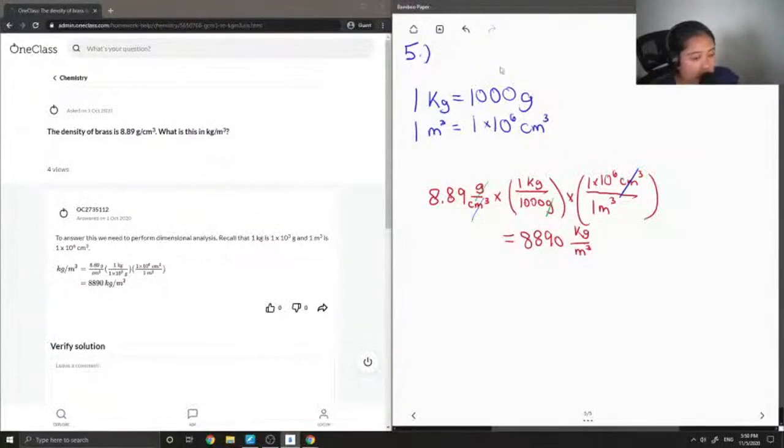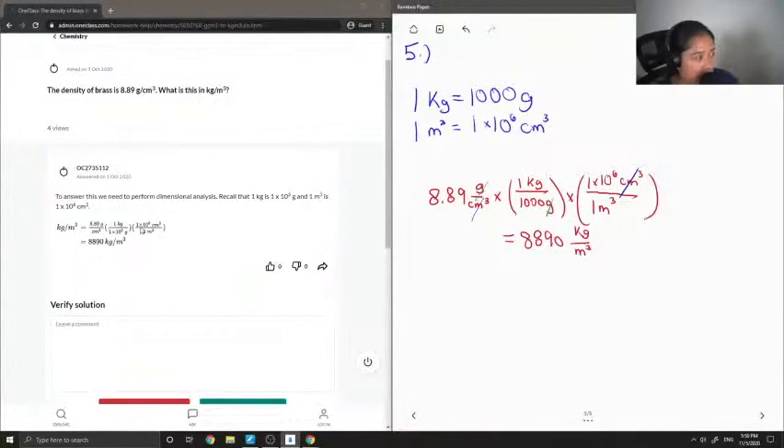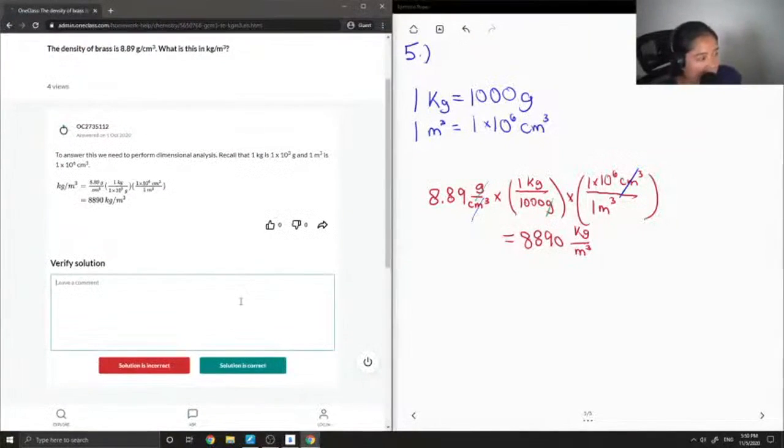So let's see what our junior tutor said. To answer this, we need to perform dimensional analysis. Recall that 1 kilogram is 1 times 10 to the 3 grams, and 1 meter cubed is 1 times 10 to the 6 centimeter cubed. And they got the same answer. So let's see if this solution is correct.